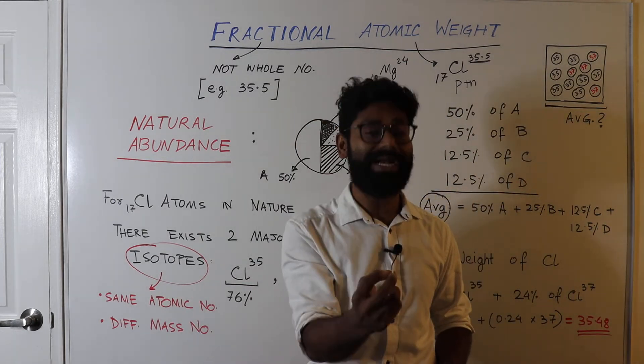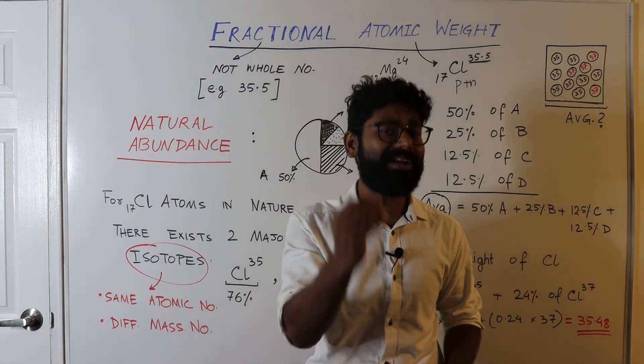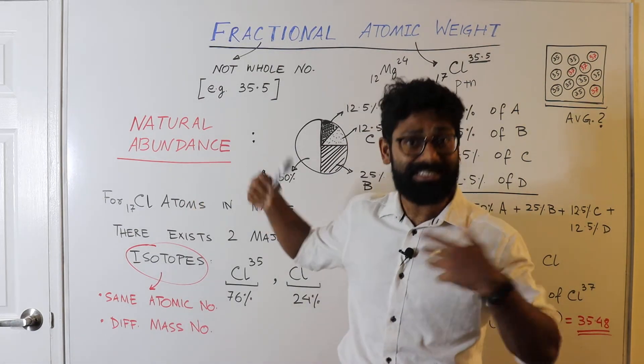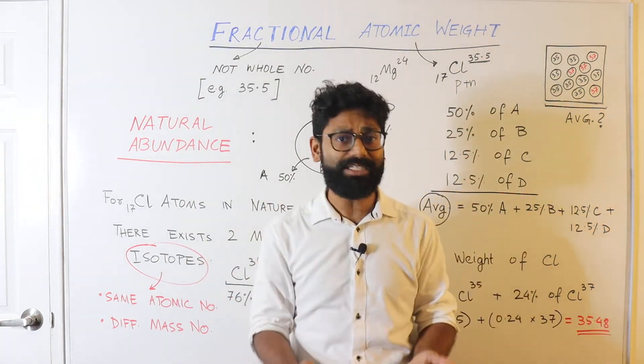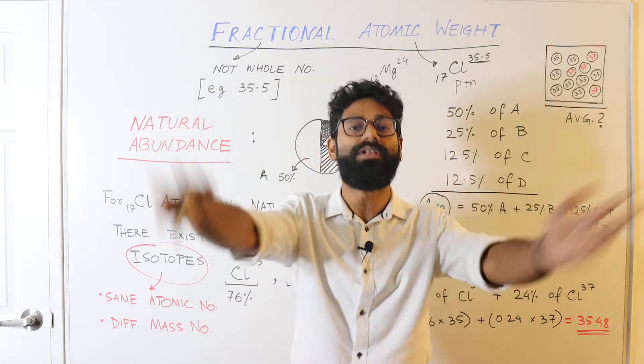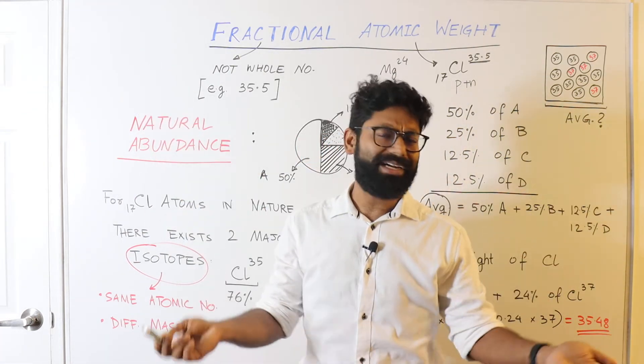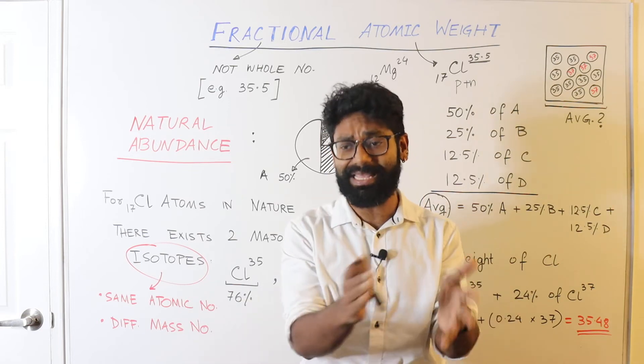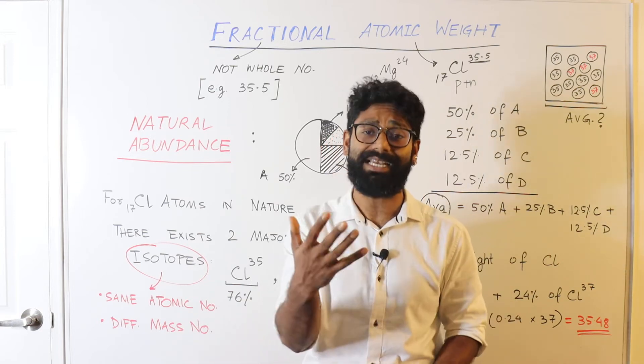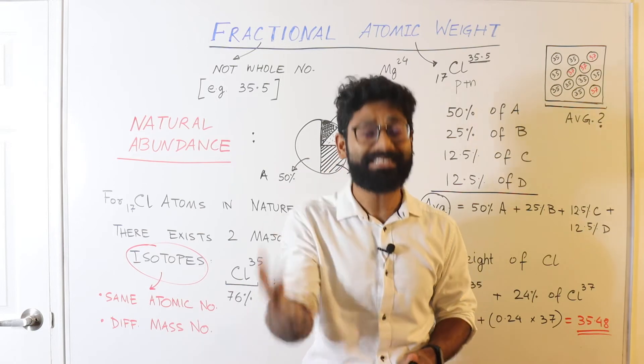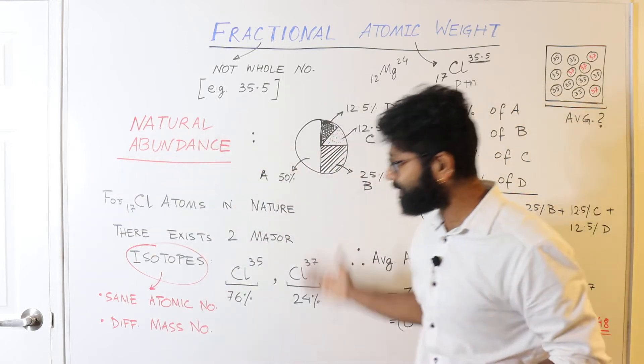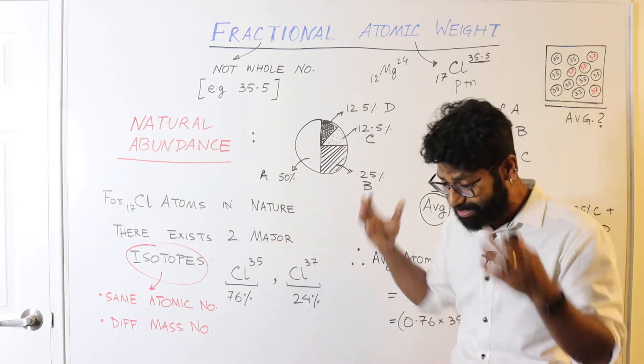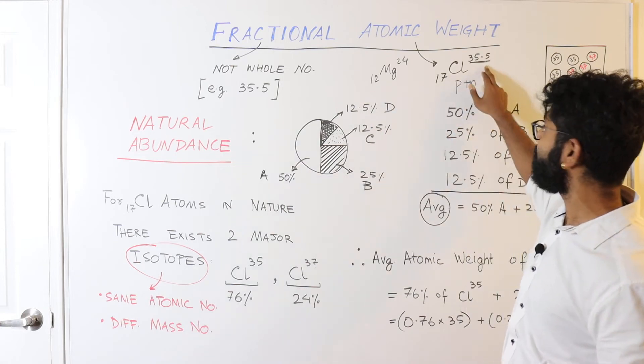Now this is the idea behind fractional atomic weight. This is very critical to understand, the concept of natural abundance, right? This is not generally taught in class and it is just said that you learn 35.5. It doesn't have to be like that. Chemistry doesn't have to be like that. Everything in chemistry makes sense if you try to find out the answers behind it, right? Now this is a simple explanation. This is the reason why chlorine is 35.5.